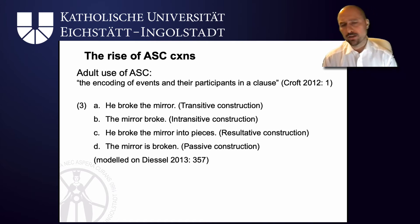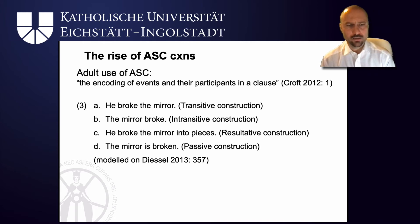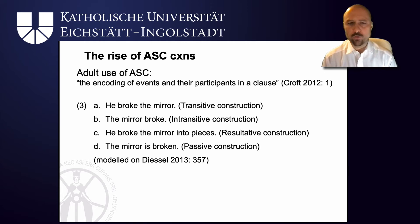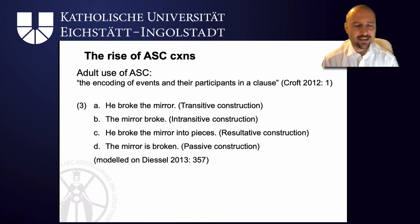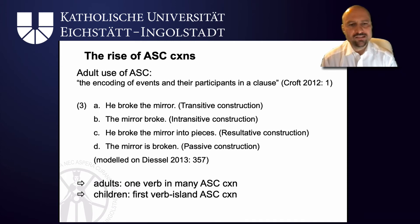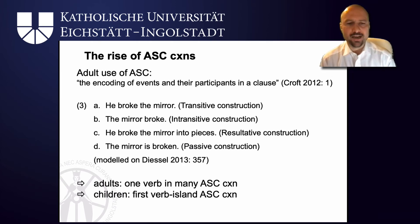And this, as we know from the cognitive linguistics session on construal, allows speakers to put a different perspective, a different viewpoint on the same scene. So someone breaking a mirror could be expressed by a transitive construction — 'he broke the mirror' — focusing on the force-dynamic relationship between the instigator and the affected mirror. Or an intransitive construction — 'the mirror broke' — focusing only on what happened to the mirror. You could describe the same scene using a resultative construction — 'he broke the mirror into pieces' — or a passive construction — 'the mirror is broken' — backgrounding the agent. Adults use one verb like 'break' in many of these argument structure constructions, whereas children, on the other hand, use them as item-based constructions — their verbs are islands tied to specific argument structure constructions.